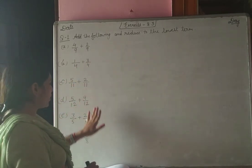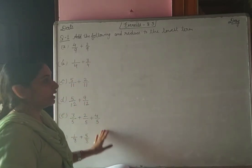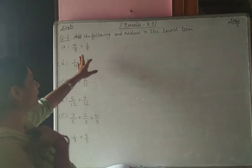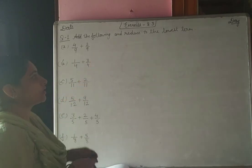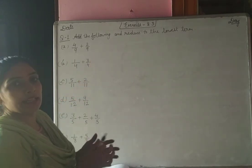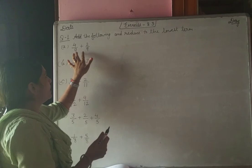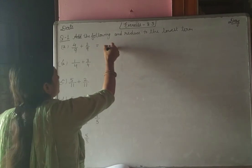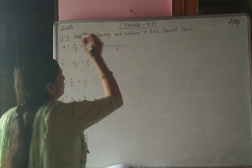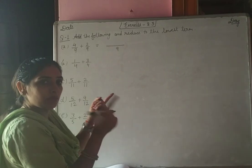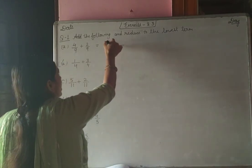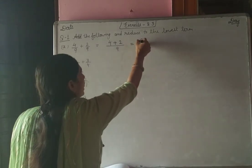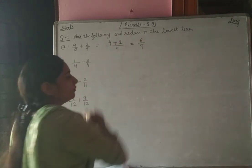Here, the questions are already given in like fraction form. All the fractions you are given — the numbers you have to add — are already like fractions. So when like fractions are given, you can directly add them because the denominators are same. If the denominator is the same, the LCM will also be the same number — here it is 9. Then the numerators remain as they are: 4 plus 2 gives 6 divided by 9.